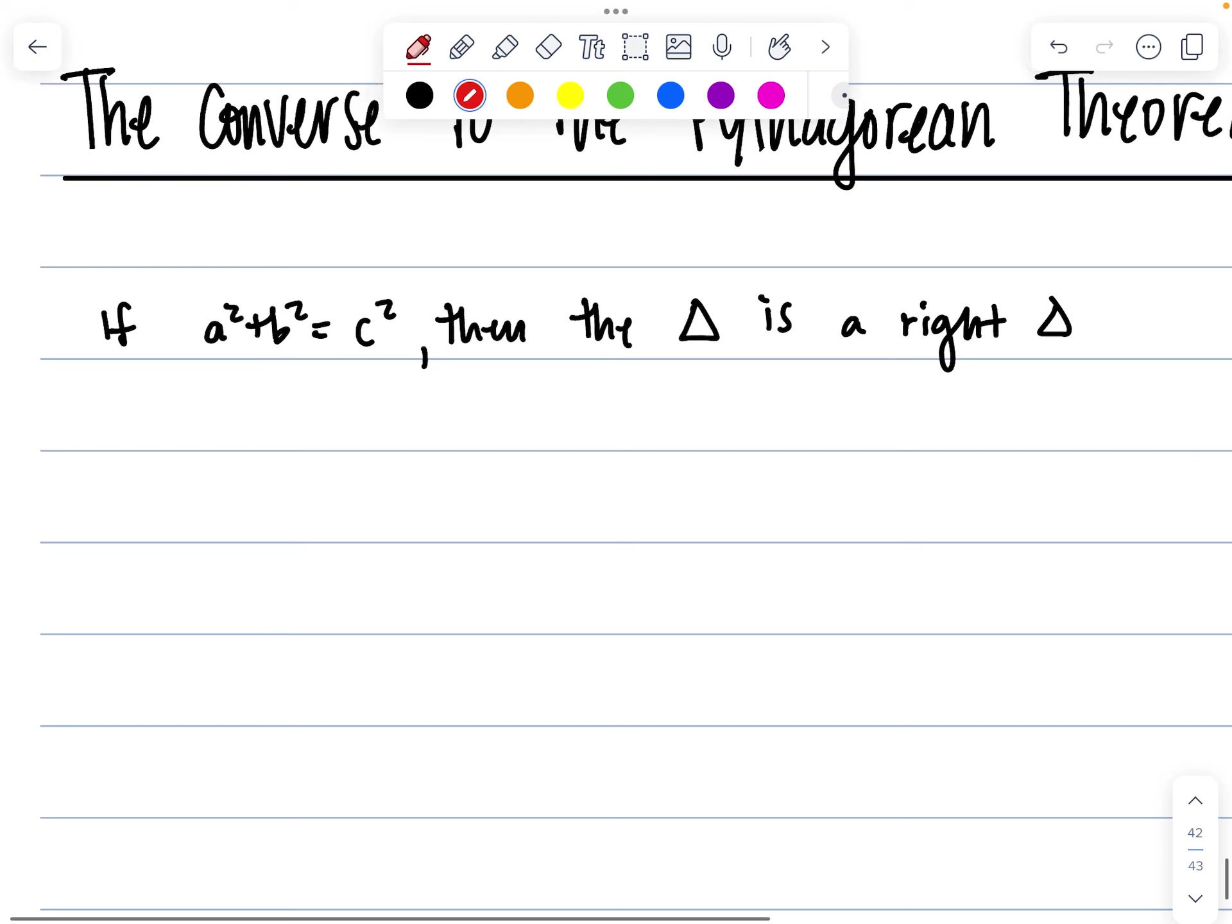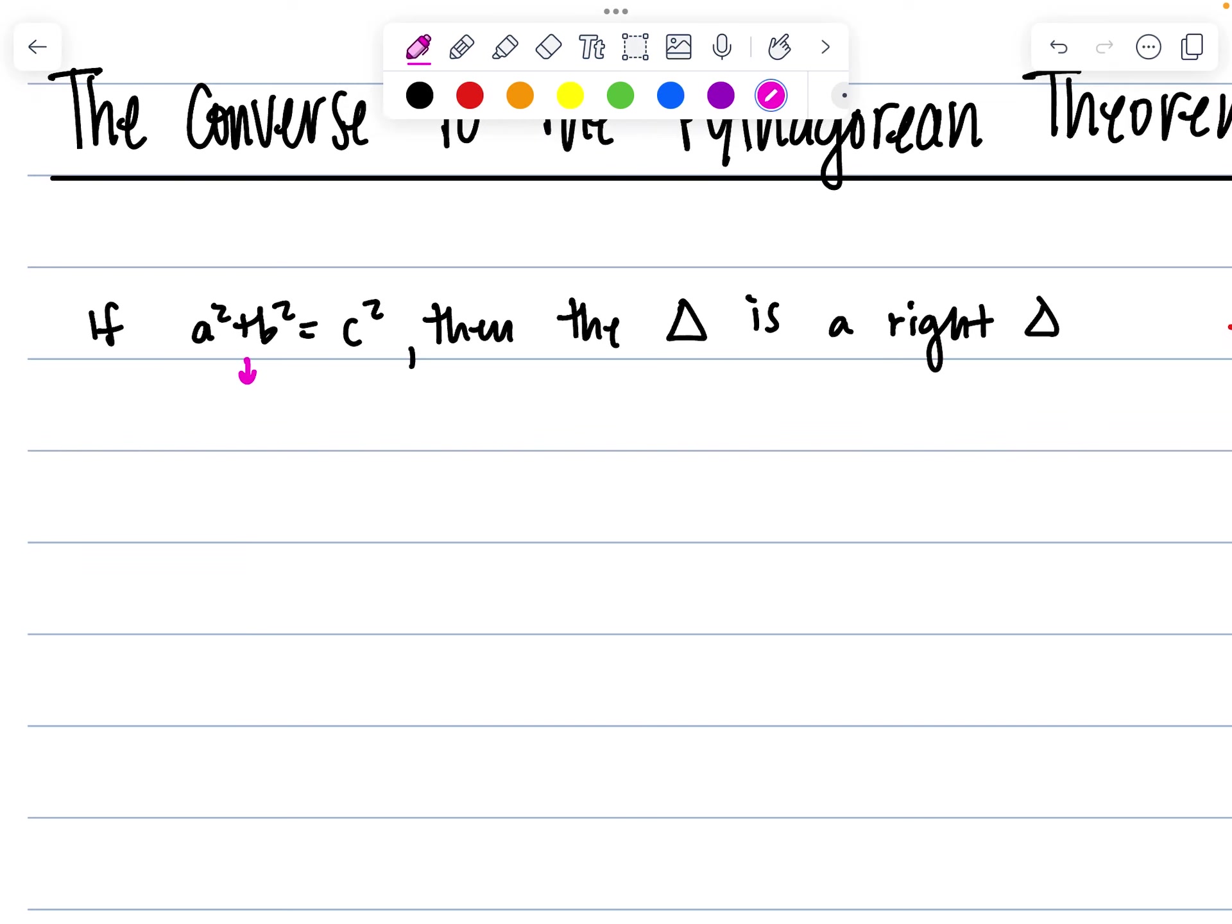And for the sake of this, I'm actually going to rewrite this a different way. You could also say if c squared is equal to a squared plus b squared. I'm putting this in pink, you don't have to copy this down, but you're going to understand why I rewrote it like this. As we know, these two are equivalent, but it's going to be easier to understand the converse this way a little bit better.